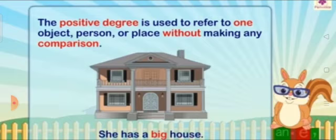So first one is positive degree. What is positive degree? The positive degree is used to refer to one object, person or place without making any comparison. For example she has a big house. So big is positive degree.